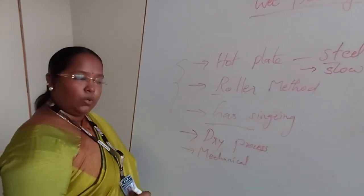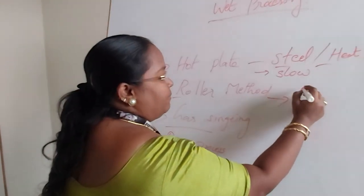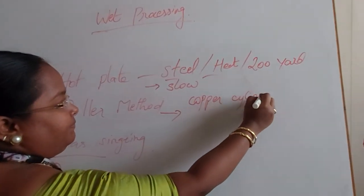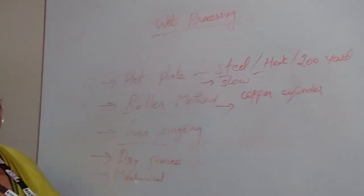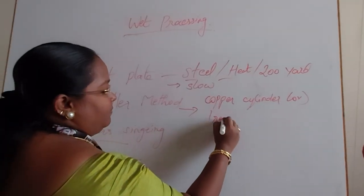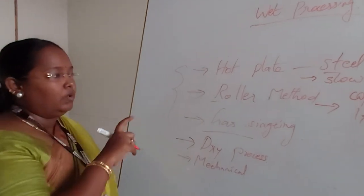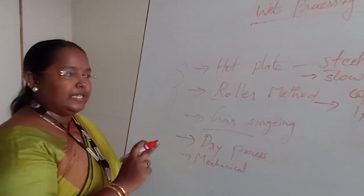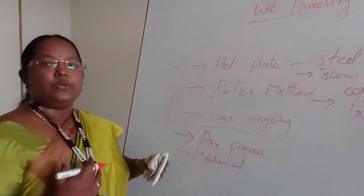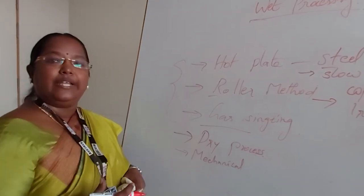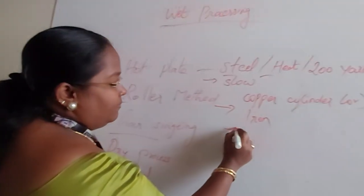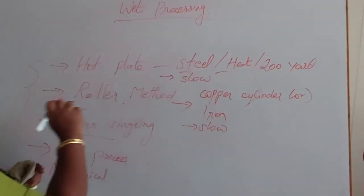The roller method uses a copper cylinder or iron cylinder. The cylinder covers the entire fabric, produces heat, and starts to burn the protruding fibers. It is also a slow method — the same drawback as seen in the hot plate method.